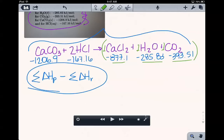I don't have to multiply them by any coefficients. So for my products, I'm going to have negative 877.1 plus negative 285.83 plus negative 393.51. So all of the products added together, that's what this funky little symbol means right here.